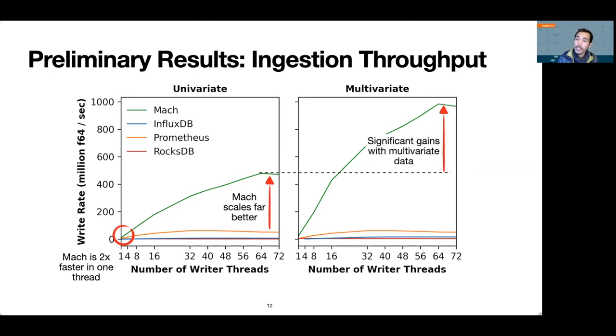Secondly, we see that amortizing multiple values with multivariate sources provides a significant increase in write throughput, something Prometheus can't do. Third, among the competitors, only Prometheus provides some reasonable write performance. InfluxDB and RocksDB are about five times slower than Prometheus. These results are consistent at different Zipf distributions.